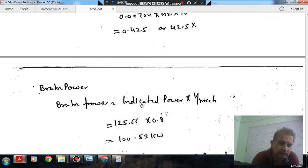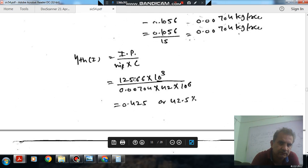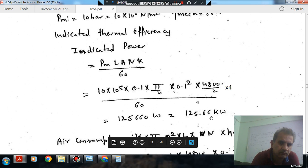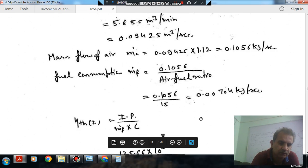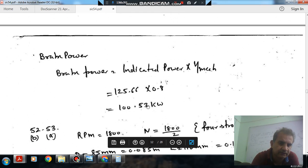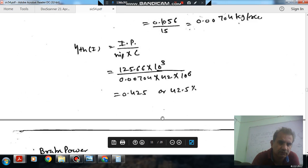The brake power is indicated power into mechanical efficiency. Indicated power is 125.66 kW. Mechanical efficiency is 0.8, so that is 100.53 kW. Answer is 100.53 kW.